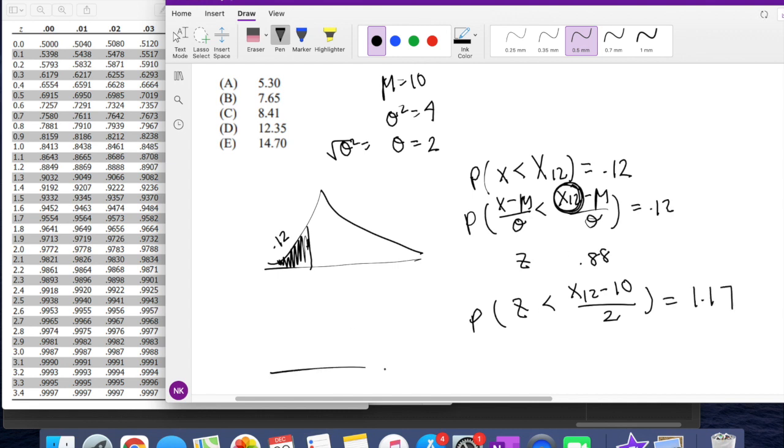But the thing is, remember, the 88% is this much. And they're saying that z-value that corresponds there is 1.17. So if you're looking for just 12%, this part, it's safe to assume that the negative 1.17 will get to that result.